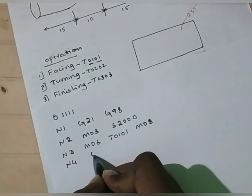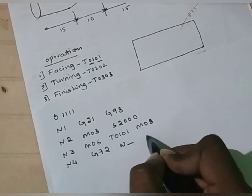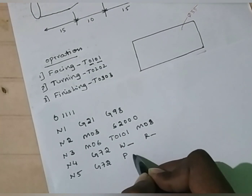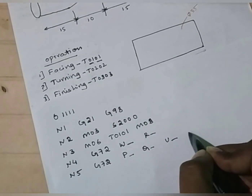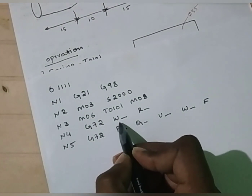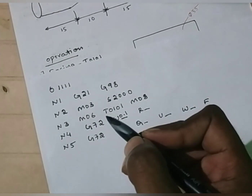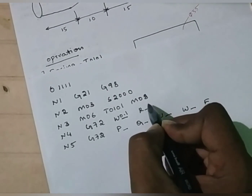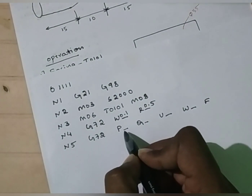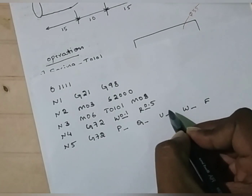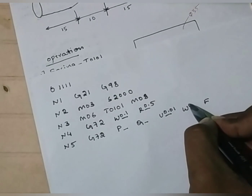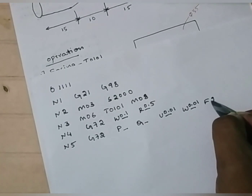The syntax for facing operation is G72, W value, R value. Next block N5, G72, P value, Q value, U value, W value, and F value. Here, G72 is the facing cycle. W is depth of cut — I am going to assume 0.1 mm, meaning in one pass I remove only 0.1 mm. R is retract value — I am going to assume 0.5 mm. In the next block N5, G72 again: P is starting block and Q is ending block. U is finishing allowance in X direction — 0.01 mm. W is finishing allowance in Z axis — 0.01 mm. Feed: let it be 20 mm per revolution.